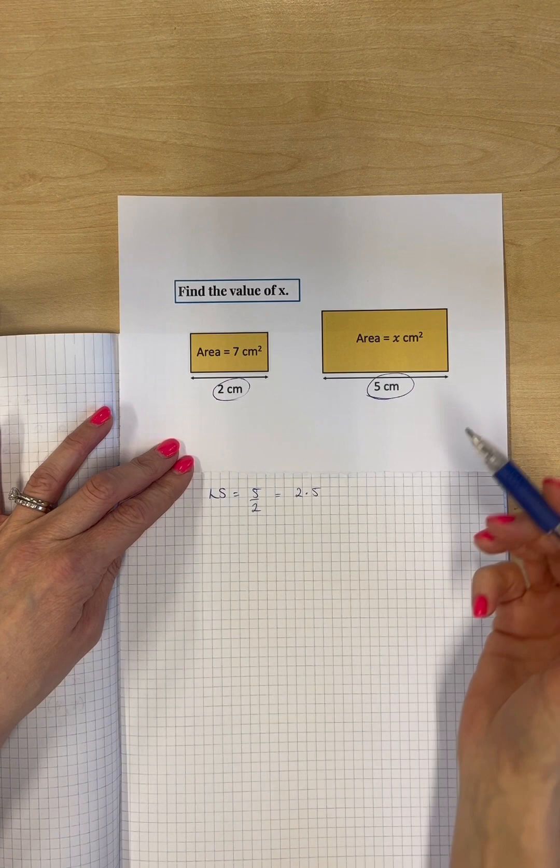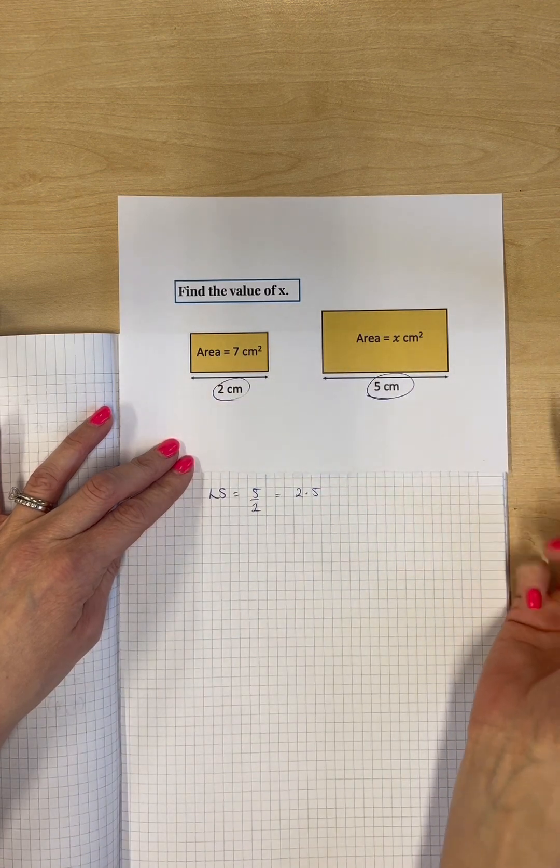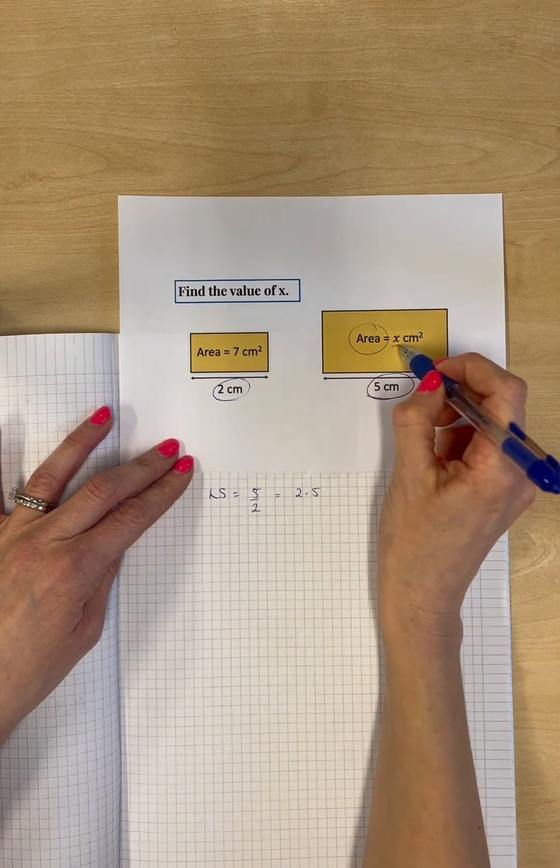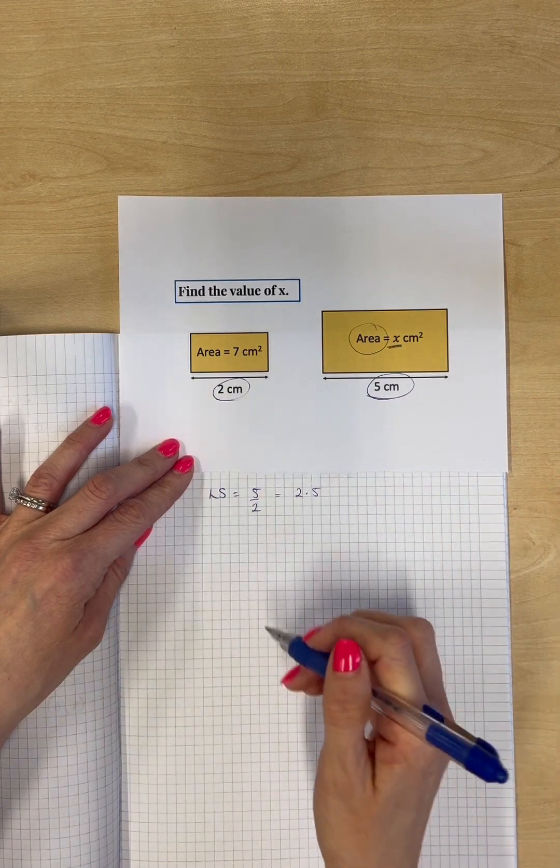But we don't want the length scale. We're not finding a missing length. We're finding a missing area. So we need the area scale factor.